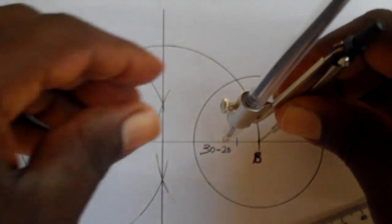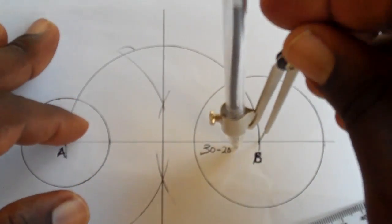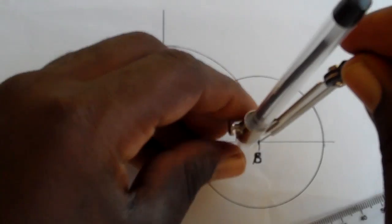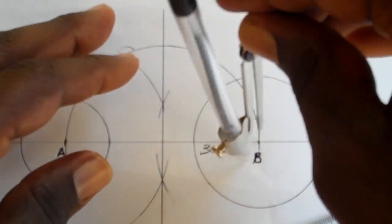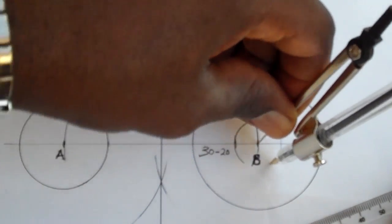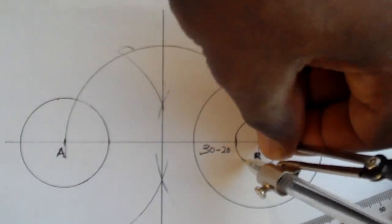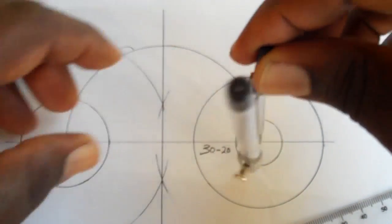The two radii, in this case - the one of the bigger circle is 30 and the one of the smaller circle is 20. So at center B, you will draw a circle of radius 10 millimeters which is equal to 30 minus 20. I hope you have understood that.